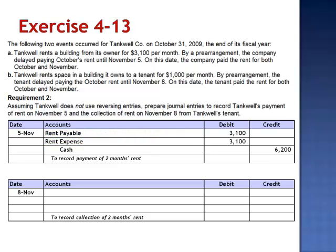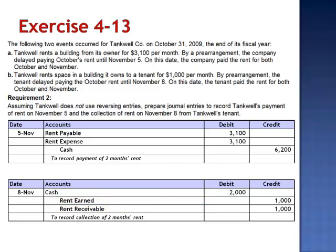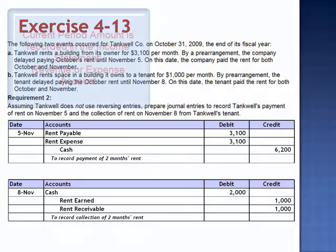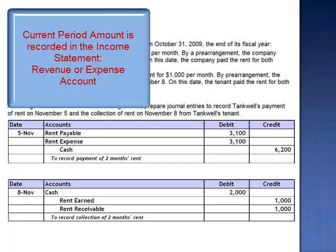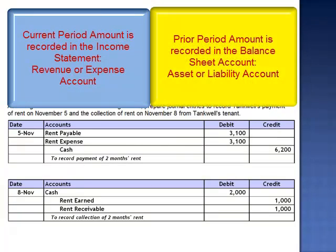On November 8, we collect two months' rent. Debit cash for $2,000, credit rent earned for the current month's rent — November's rent of $1,000 — and credit rent receivable for the prior month's rent, October's rent of $1,000. It's a little bit tricky. We need to keep track of how much of the cash, either collected or paid, represents the current amount — rent expense or rent earned — or the prior amount — rent payable or rent receivable.